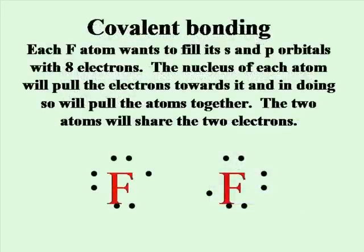Each F atom wants to fill its S and P orbitals with eight electrons. The nucleus of each atom will pull the electrons towards it, and in doing so, will pull the atoms together. The two atoms will share the two electrons, each thinking that they have eight valence electrons.